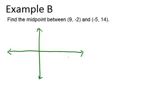So the point (9, -2) is about over here, and (-5, 14), let's just say that's right here. So we're trying to find the midpoint that would exist on the segment that connects those two points. It's going to be somewhere like right here.